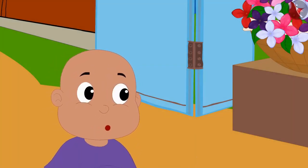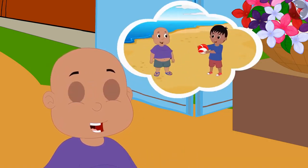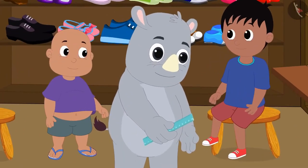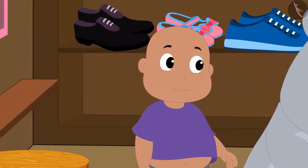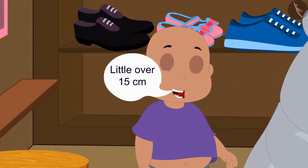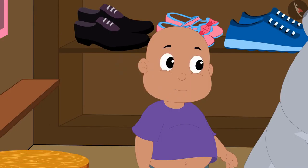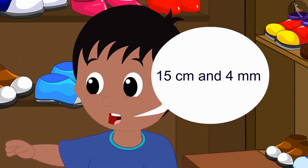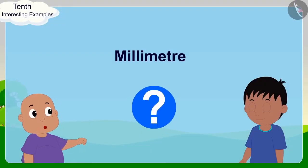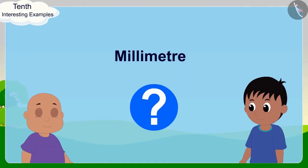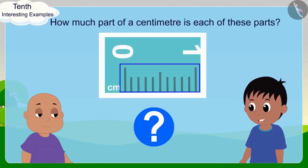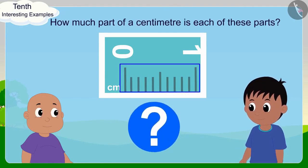Babalu said: Wow, Raju! Let's buy new slippers for you and me so that we can have a lot of fun on the beach. In the shoe shop, Gaggu first measured Raju's foot. Babalu told Raju: Raju, your foot is a little over 15 centimetres. Raju replied: Yes, Babalu, my foot measures 15 centimetres and 4 millimetres. Babalu asked: What is this millimetre? Raju said: Look, there are ten equal parts of a centimetre on a scale. So, how much part of a centimetre is each of these parts? Babalu quickly responded: One tenth.